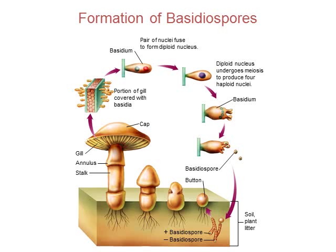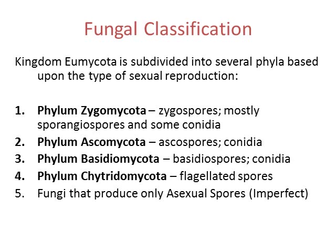The last type of sexual reproduction produces basidiospores — this is where a mushroom is formed. Again, you have your positive and negative strains; they fuse together, and out of that fused cell, a mushroom or toadstool is produced. Underneath the mushroom cap you have gills, and that's where the spores are produced and released. So basidiospore refers to any type of mushroom structure that is formed through this process.